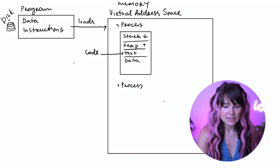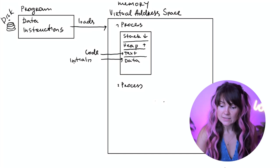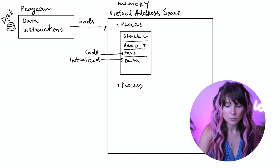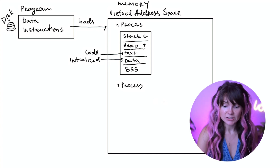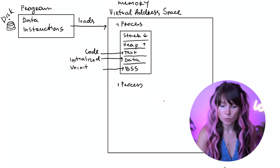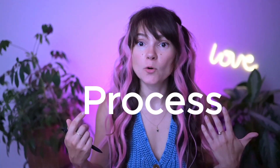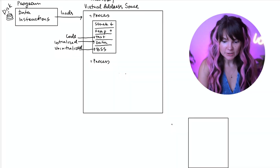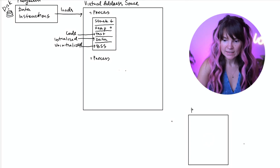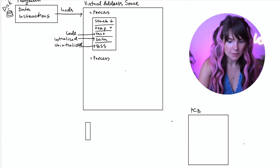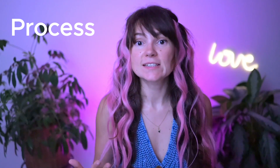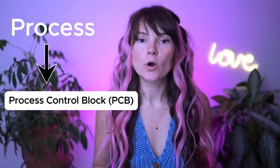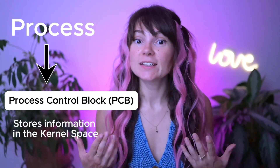There is a data section that stores initialized data, such as C variables with set values, and is typically marked as readable and writable. Lastly, the BSS section is reserved for uninitialized global data. When the process is created, an entry is made in both the process control block and the process table.